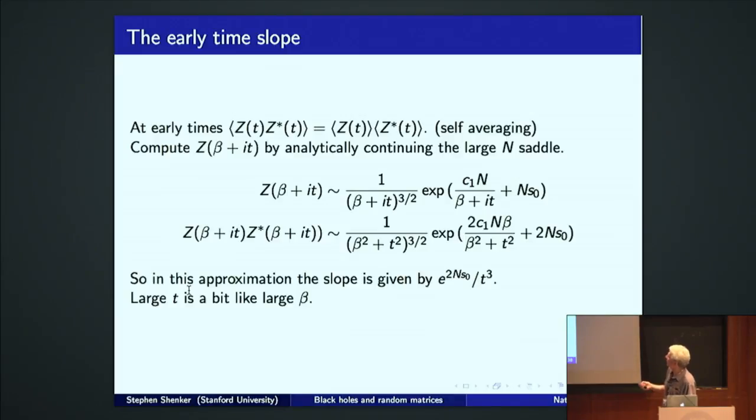We can then try to calculate ZZ star by assuming at early time, which is correct, that this is approximately is factorized. Then all we do is analytically continue that formula in time. This is analytically continuing beta to beta plus IT. Taking its modulus squared, you get a formula like this. This thing is in the exponent, so as time gets large, this drops like a bomb. In this approximation, this quantity is given by one over T squared to the three halves, which is called one over T cubed, with a coefficient that's twice the E to the twice the zero temperature entropy. We see here that large T is a little bit like large beta. This I sometimes matters and sometimes doesn't. So again, we're seeing long time behavior that's a power law, presumably dictated by the edge of the SYK spectrum.